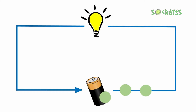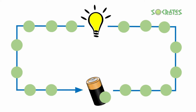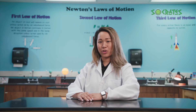Think about this in relation to a light bulb. In a circuit, electrons flow from the battery, through the wires, and into the light bulb. When the bulb receives enough of these electrons, it will light up. In the case of a light bulb, we're transferring electricity into light energy.